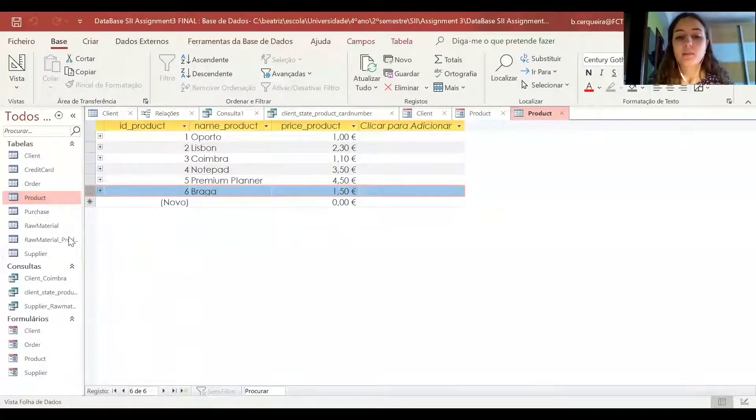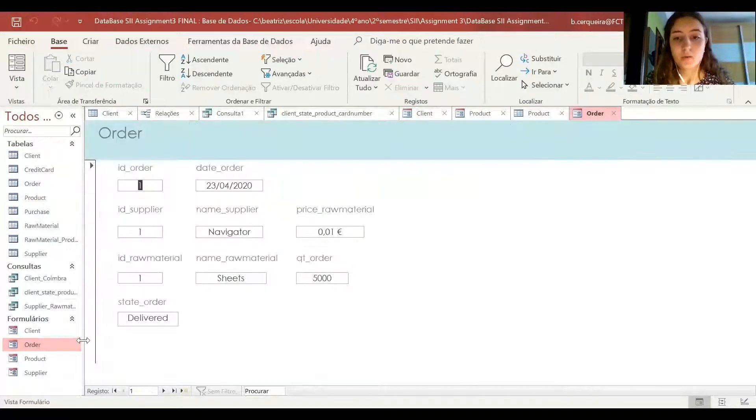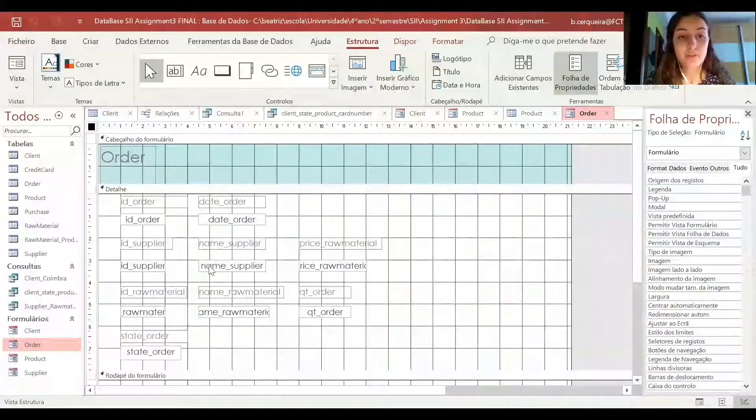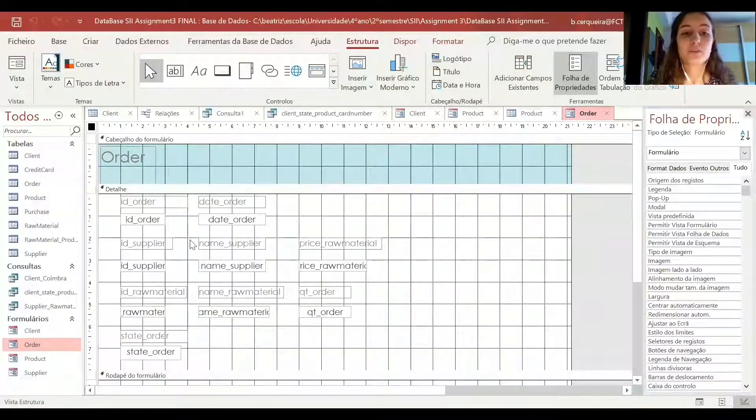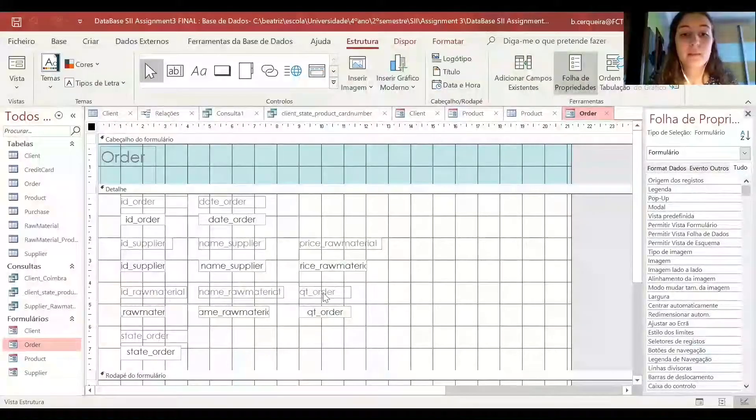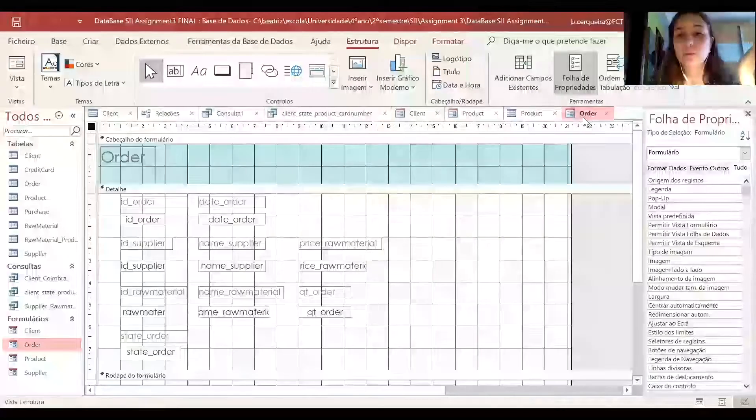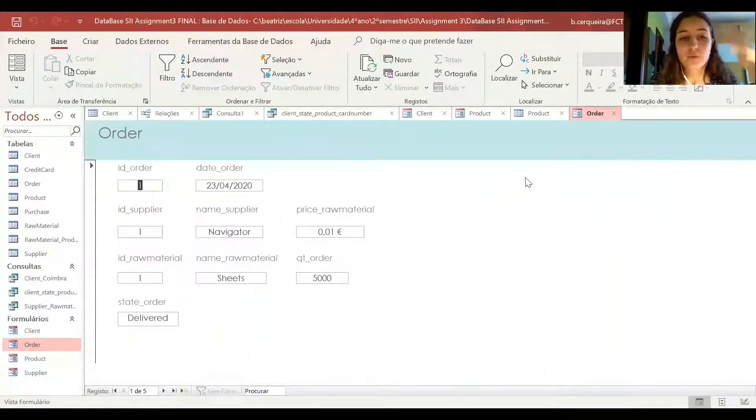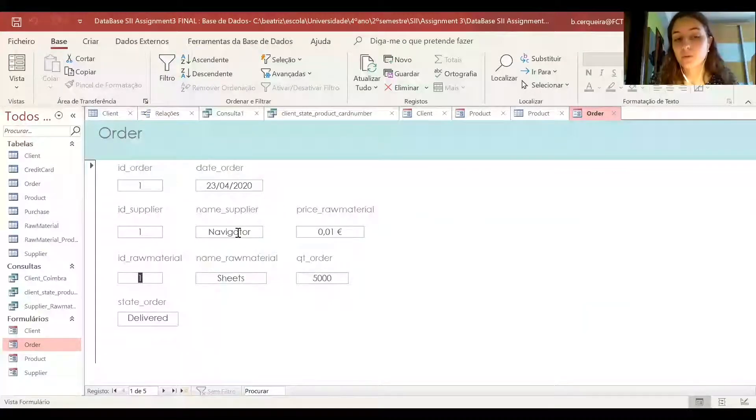You can still add other tables fields which we did in the orders form, for example, because we had just the orders tables information but we chose to add also the name of the supplier and the name and price of the raw material so it could be more user-friendly and easier to create a new order using the form because just using the ID maybe we wouldn't know which supplier we were talking about or which raw material we were talking about.